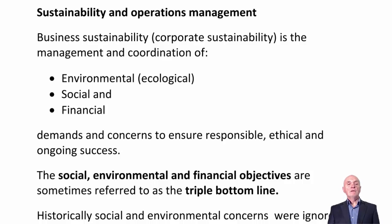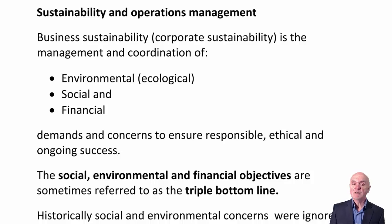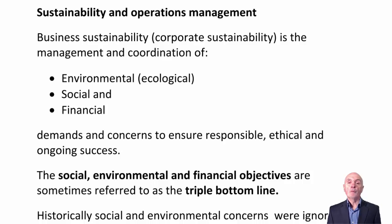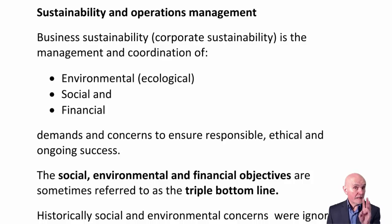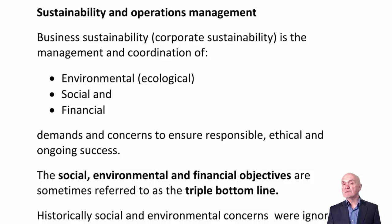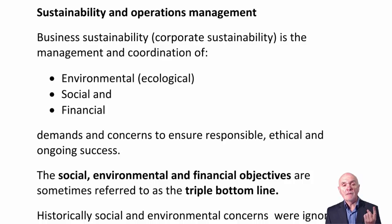Finally, we look at sustainability and operations management. Business sustainability, also known as corporate sustainability, is the management and coordination of three elements: environmental or ecological sustainability, social sustainability, and financial sustainability — sometimes known as the triple bottom line.